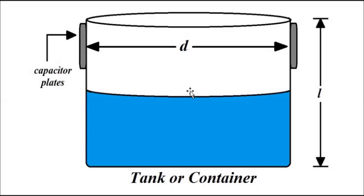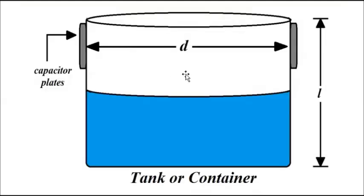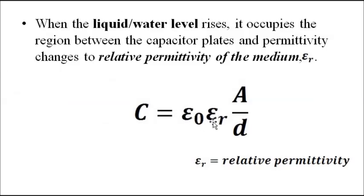When the liquid level is below the capacitive transducer and not touching the plates, the capacitance is simply C = ε₀A/d, since the medium between the two plates is air. When the water level rises and touches the capacitive plates, the medium between the plates becomes the liquid, so the capacitance becomes C = ε₀εᵣA/d — the relative permittivity now comes into play.